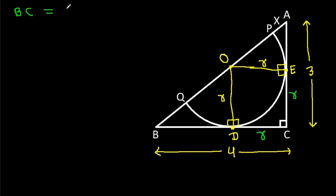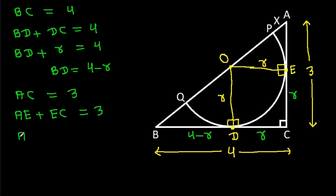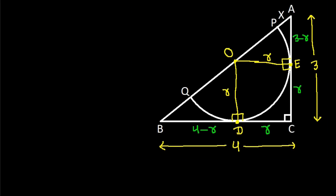We have BC is 4 and BC equals BD plus DC. So BD plus R equals 4, which gives BD equals 4 minus R. Similarly, AC equals AE plus EC, so AE plus R equals 3, which gives AE equals 3 minus R.